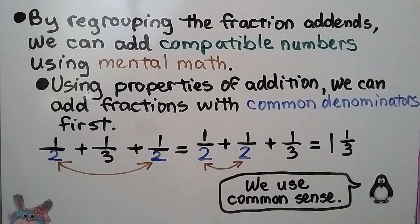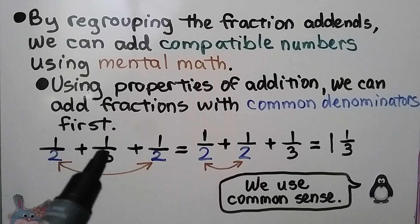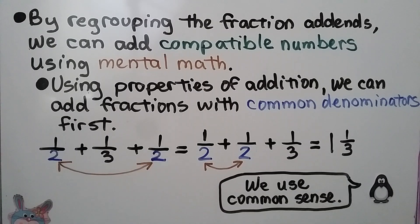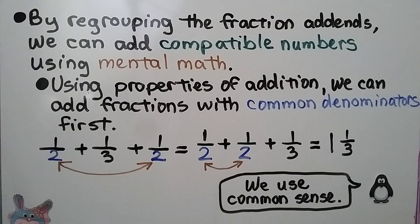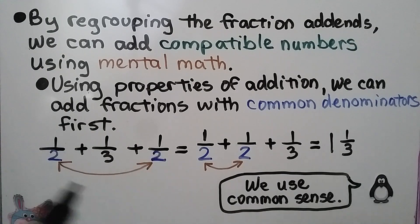By regrouping the fraction addends, we can add compatible numbers using mental math. Using properties of addition, we can add fractions with common denominators first. Here we have 1 half plus 1 third plus 1 half, which equals 1 half plus 1 half plus 1 third, and that's equal to 1 and 1 third. We add the half and the half together first to equal 1 whole, then we add the 1 third.